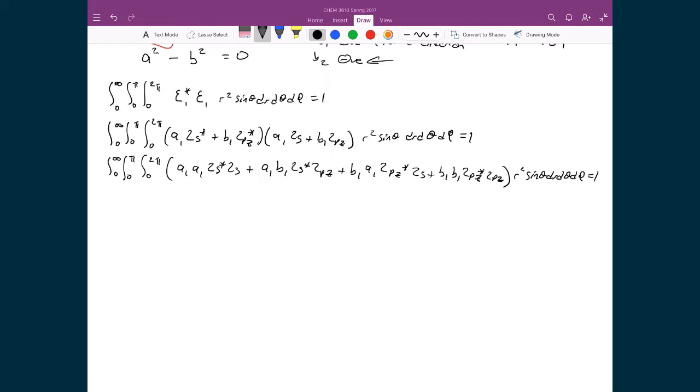I'm now going to employ normalized terms and orthogonal terms to simplify these integrals. I have a 2S star times 2S, the integral over all space, since they're normalized, that's going to be equal to 1. I have 2S star times 2P Z, these two states are orthogonal, so that's going to go to 0. I have 2P Z star to 2S, an integral of those two terms over all space. They're orthogonal, so that ends up being equal to 0.